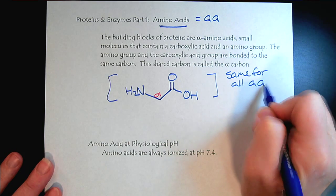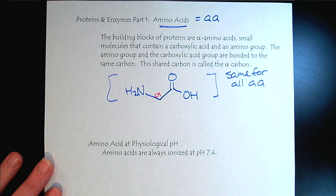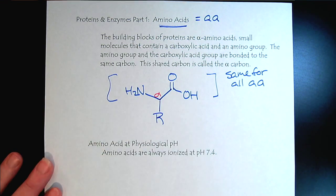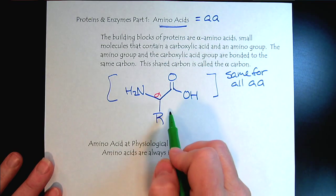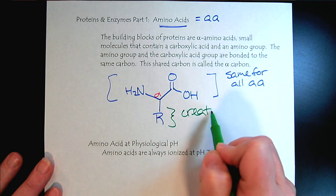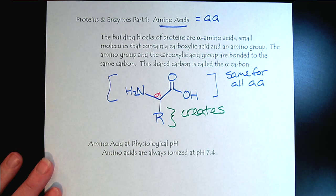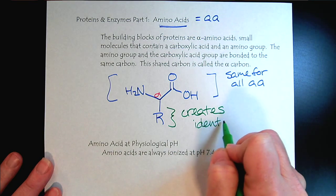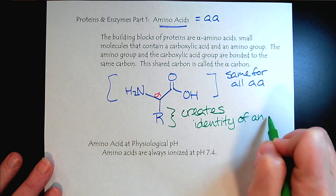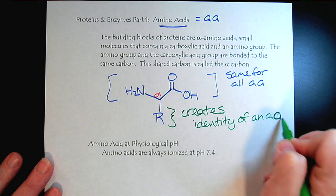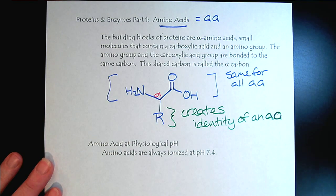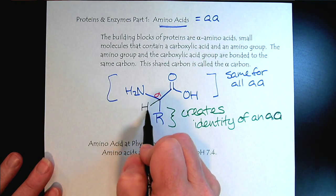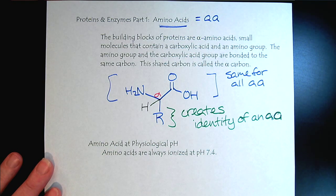This part is important to know, and we'll look at the chemistry here. It's the R group that creates the identity of an amino acid — it separates valine from alanine from phenylalanine. Remember that carbon always wants four bonds, so there's an understood hydrogen on the alpha carbon as well.